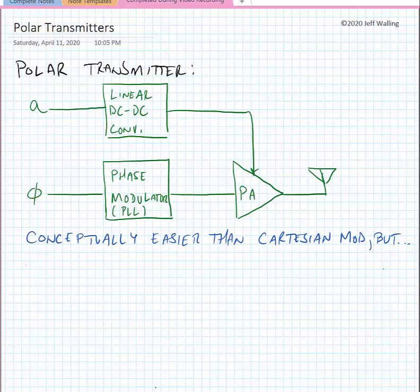This is driving a power amplifier and importantly this power amplifier doesn't have to be linear. So conceptually this is actually easier than cartesian modulation. The power amplifier is effectively just doing a multiplication of the amplitude and phase.